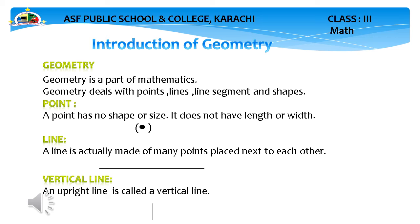Now, first of all — point. What is a point? A point has no shape and no size. A point is not a shape nor a size. It does not have length or width. This is the example of the point — here, in a bracket, we have a point. This is called the point.